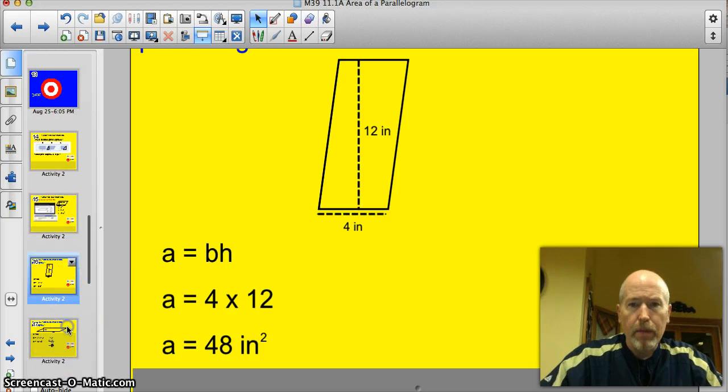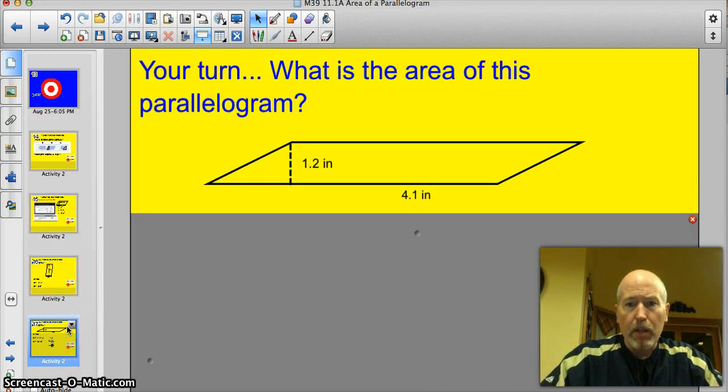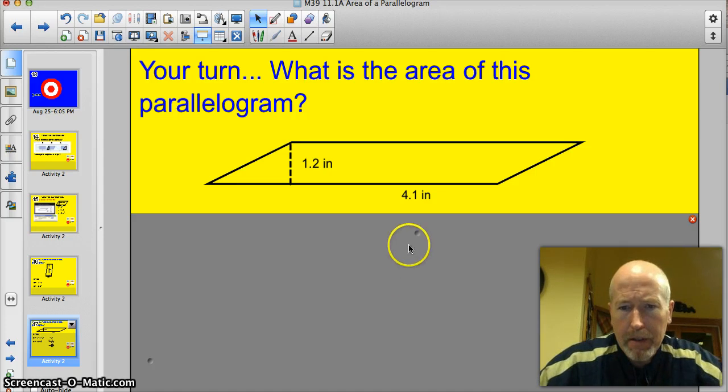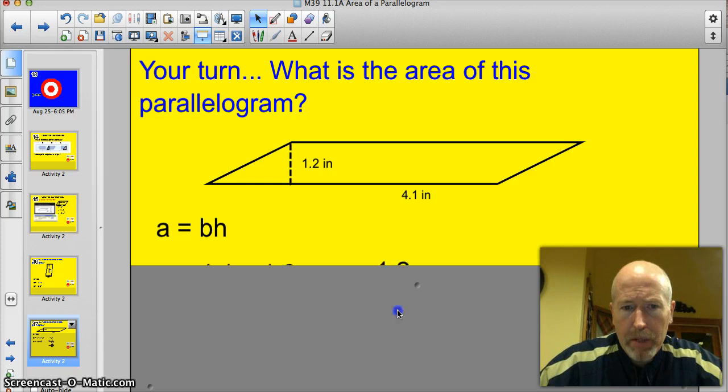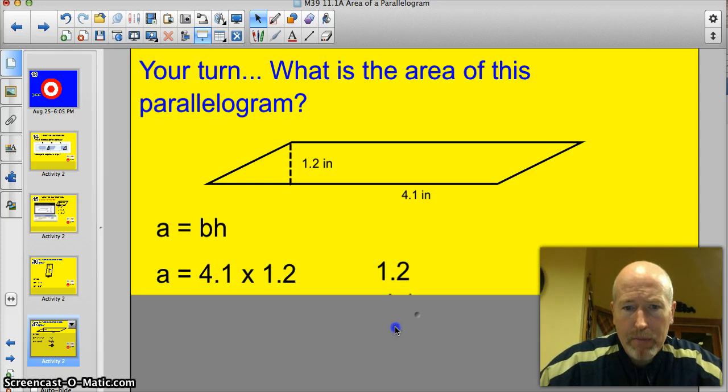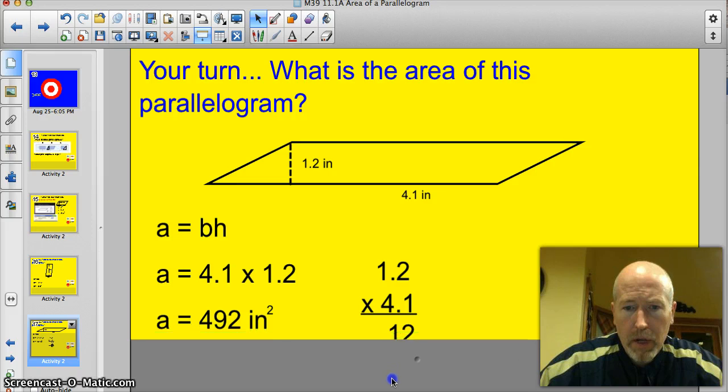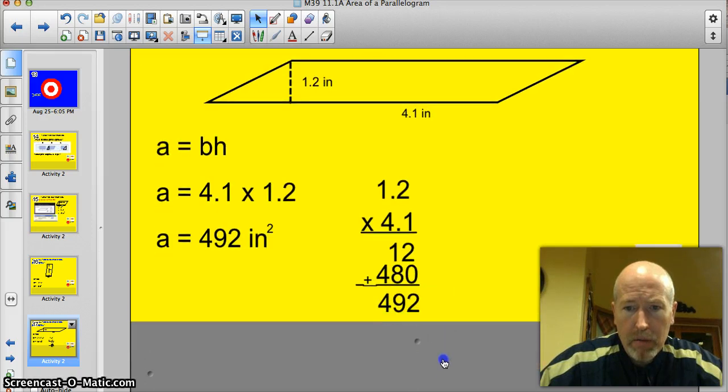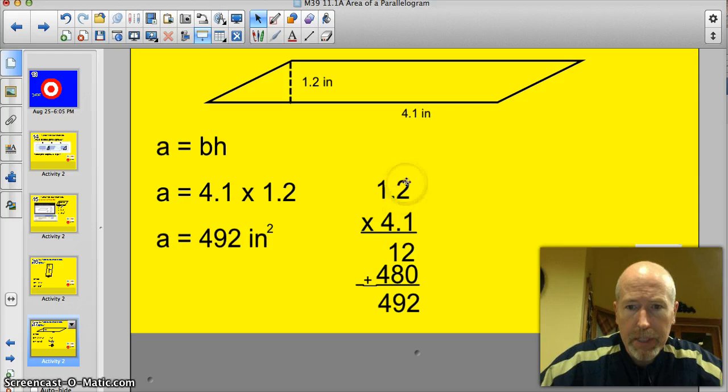All right, let's move on to the next one. What is the area of this parallelogram? Go ahead and do it. I'll pause it. It's decimals. You can't multiply those in your head. All right, let's see how you did. All right, there's my formula again. 4.1 is the base times 1.2. So I had to go over on the side over here. I had to multiply those decimals out, which is a little bit harder than it is for you, because I have to do it using my mouse. I ended up with a total of 492, which is going to be inches squared.